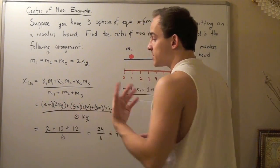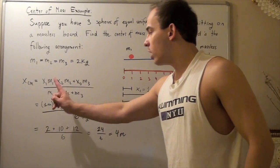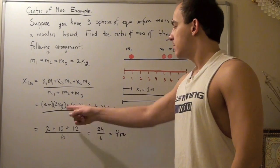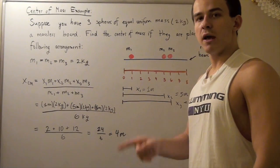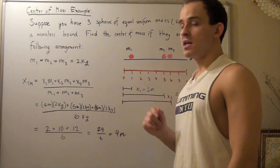So, we plug in our displacements or our positions, and we plug in our masses, and we get the following. One meter times two kilograms plus five meters times two kilograms plus six meters times two kilograms and divide the whole thing by six kilograms.